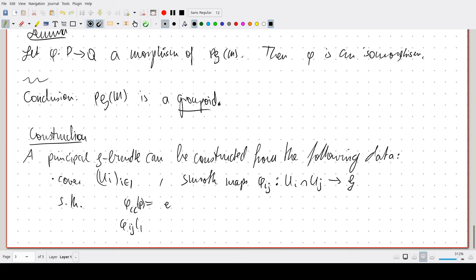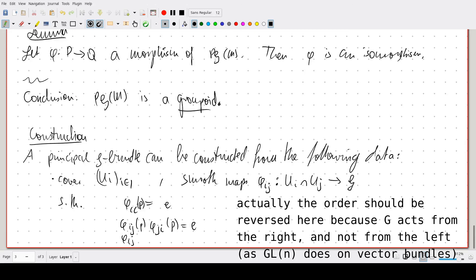Phi ij, phi ji is the neutral element of G. And phi ii at phi ij, phi jk, and phi ki is the neutral element of G.